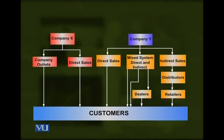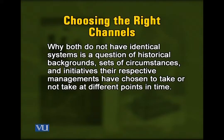Why is there variation between the selling models of two companies? Not only are there variations between the companies — if you take a look at just one company, it has a set of mixed systems to reach its customers. The one that is selling directly is more likely to make better margins than the one selling indirectly. Why companies do not have identical systems is a question of historical backgrounds, sets of circumstances, and initiatives that managements decided to take or not take at different points in time.